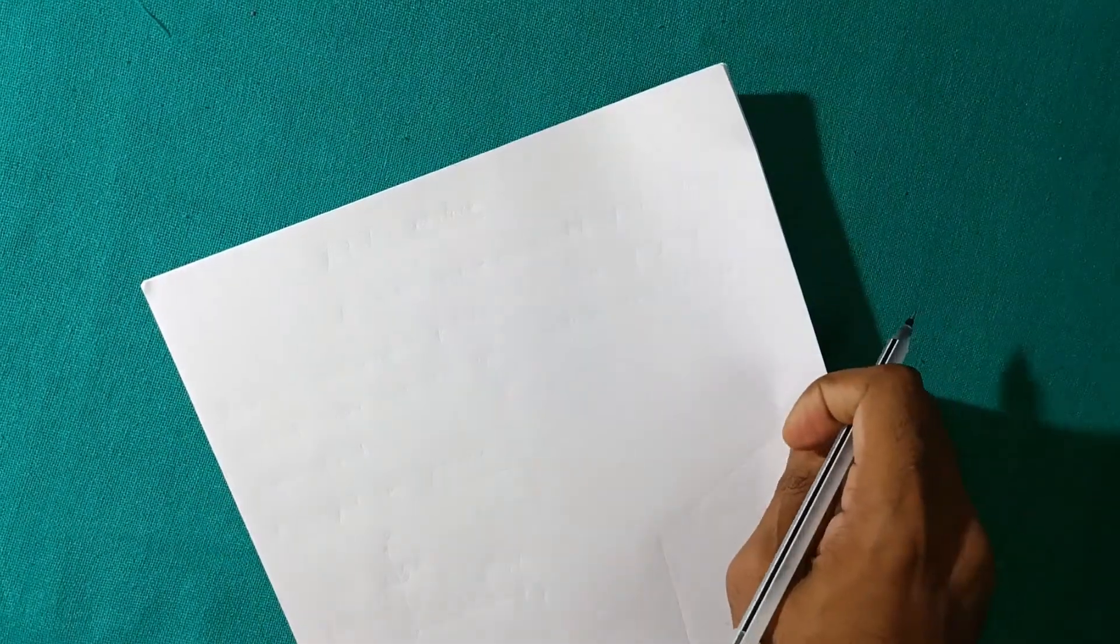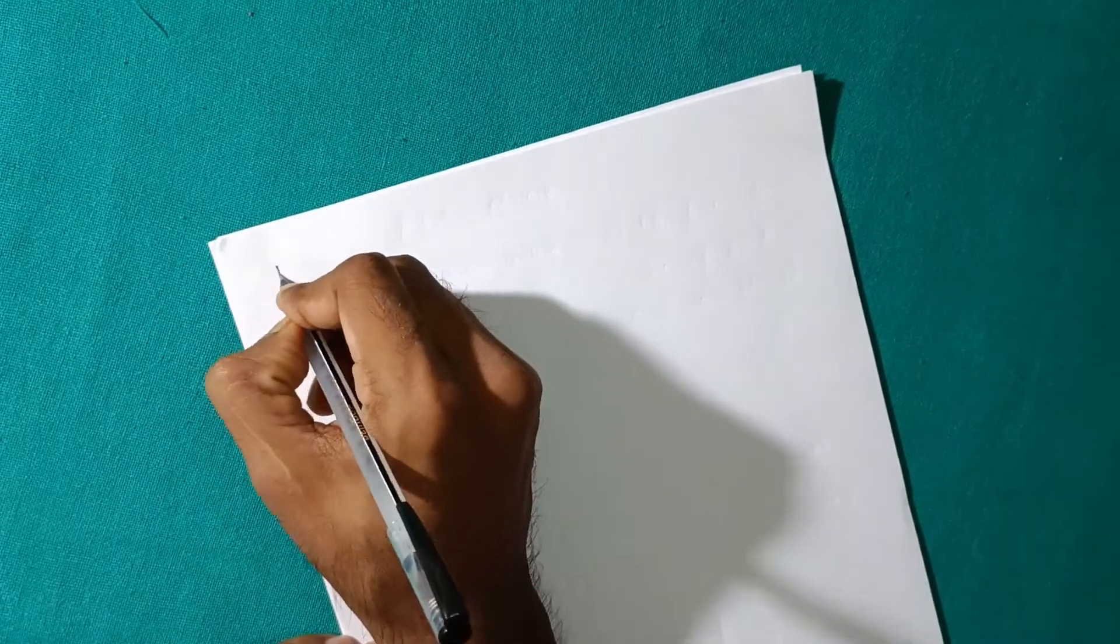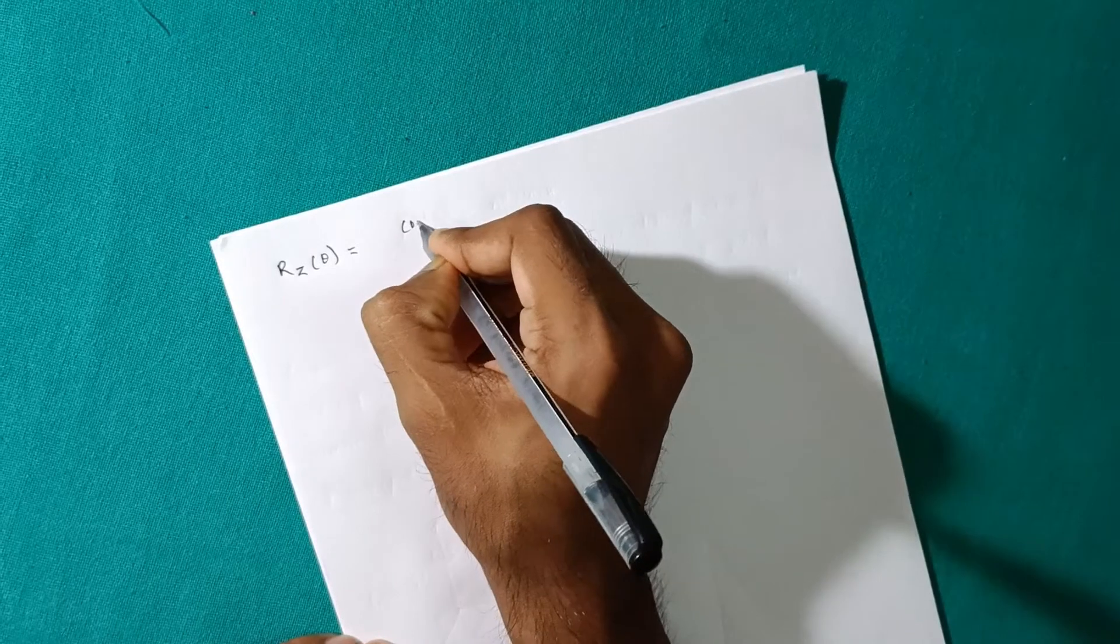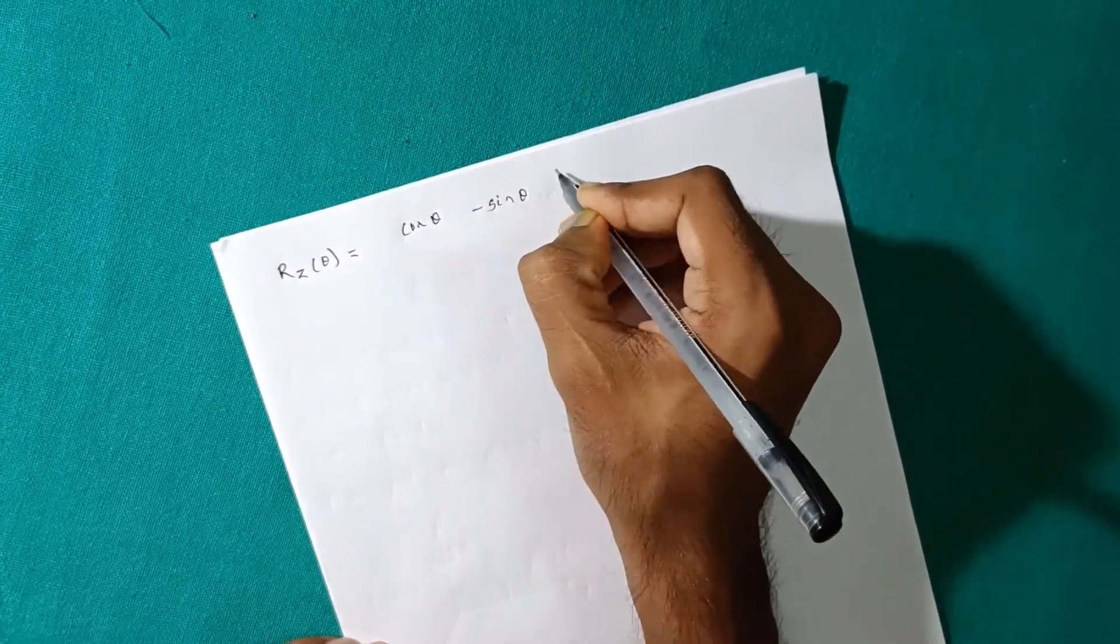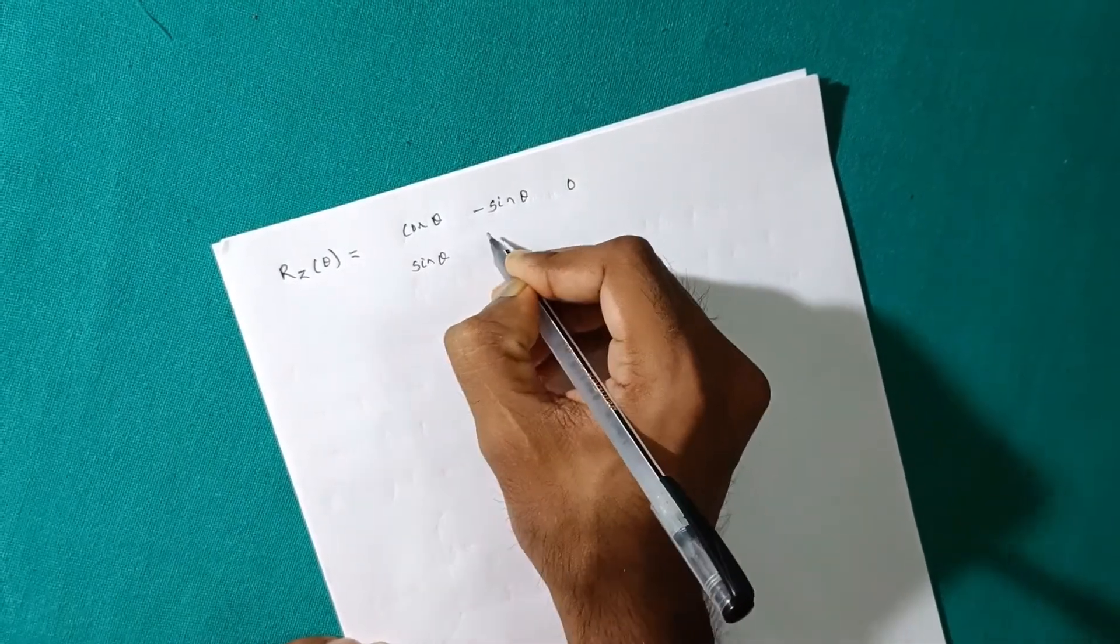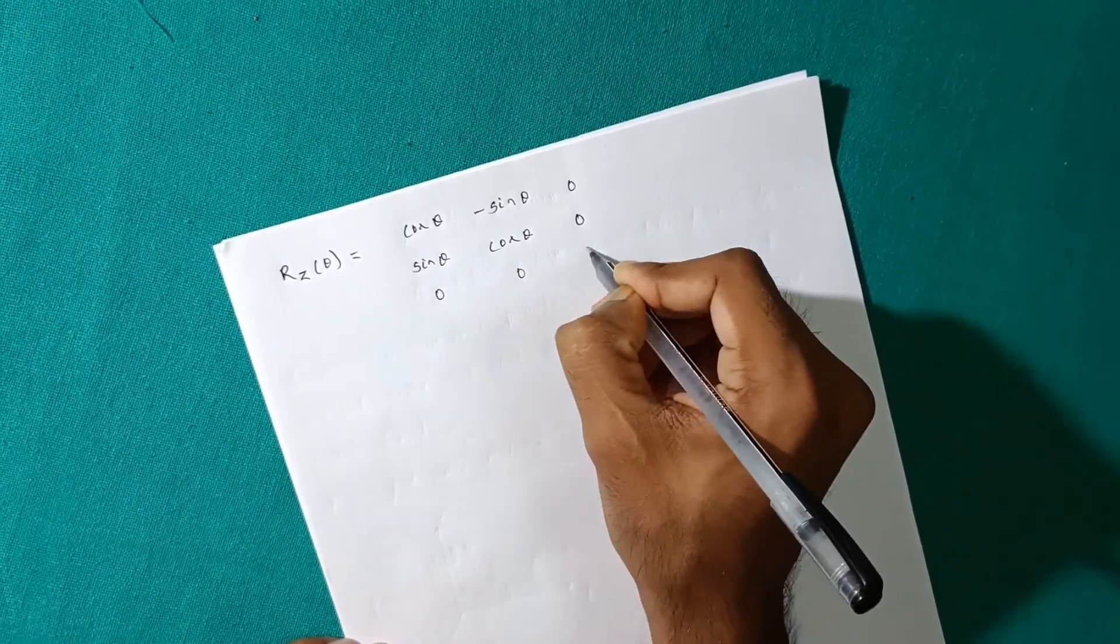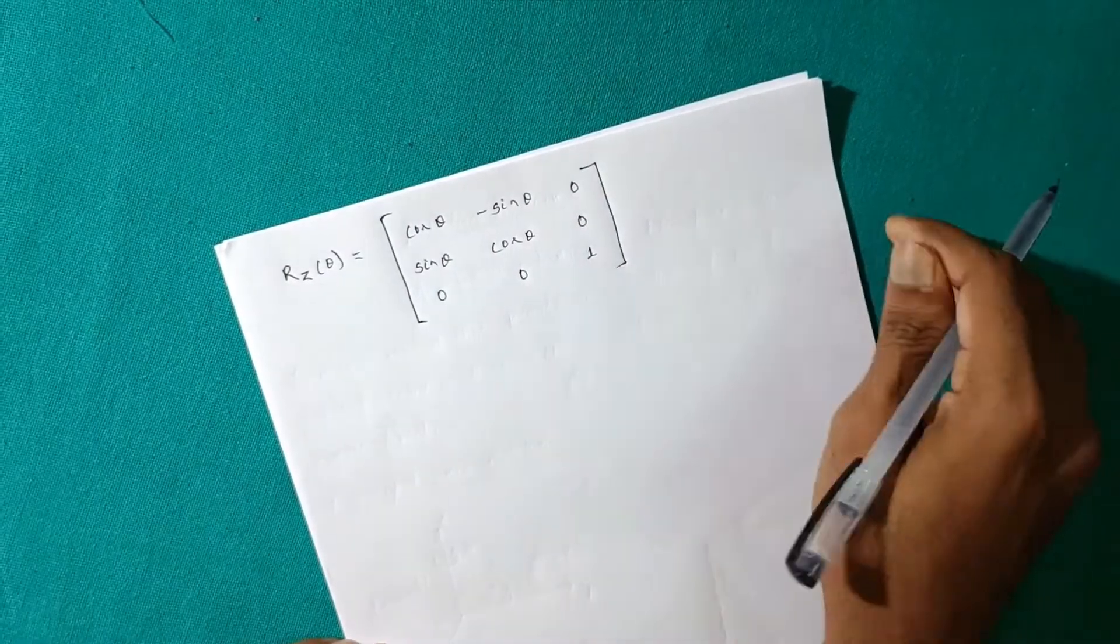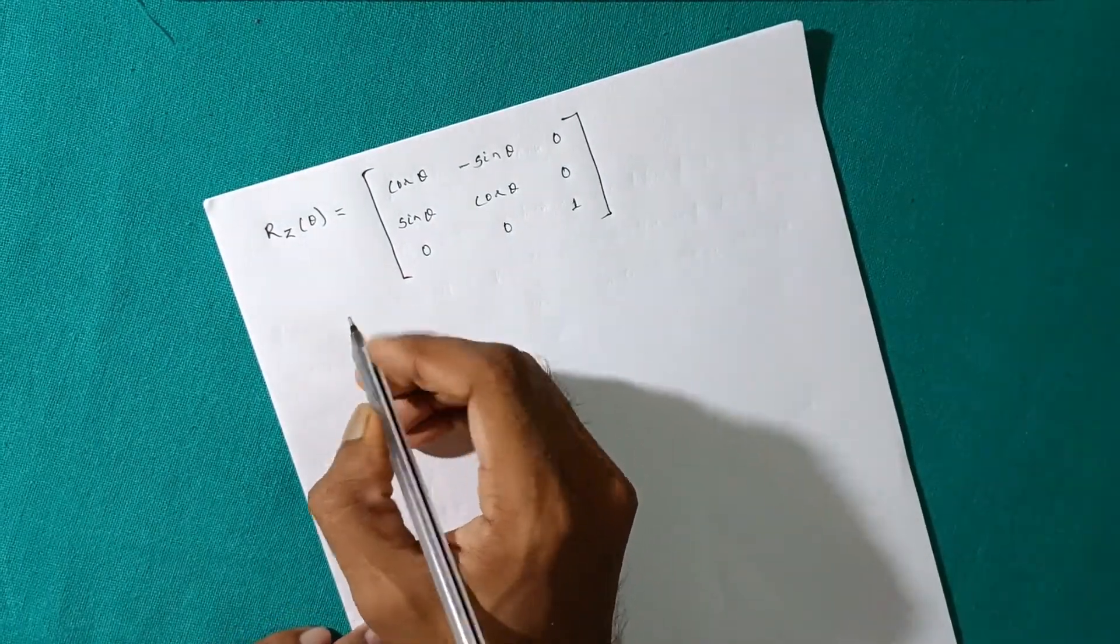Here are the formulae for Z axis. R_z(theta) equal to cos theta, minus sin theta, 0; sin theta, cos theta, 0; 0, 0, 1. So this is the rotation matrix for Z axis with an angle theta.